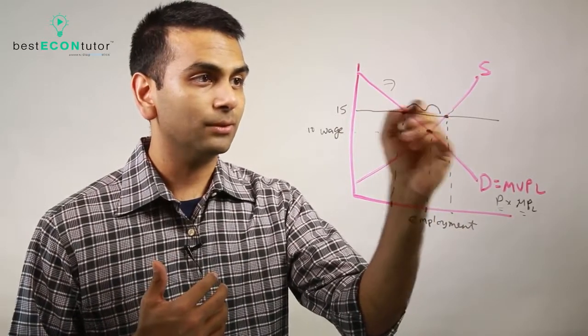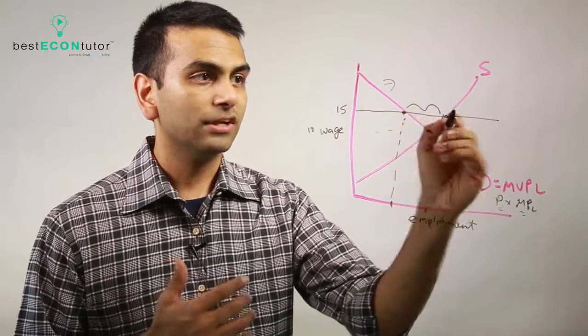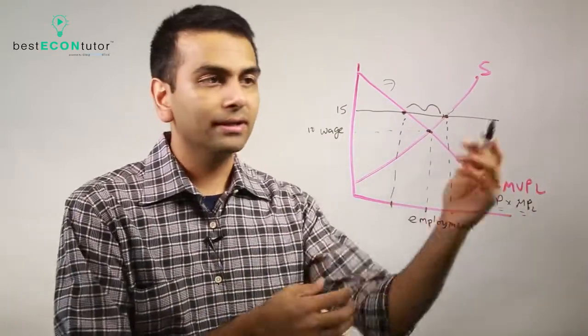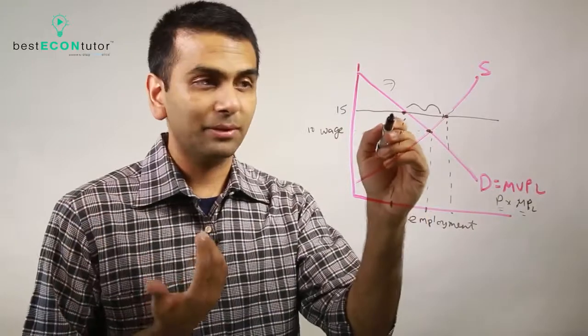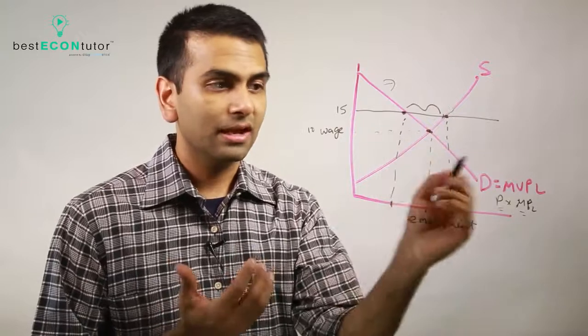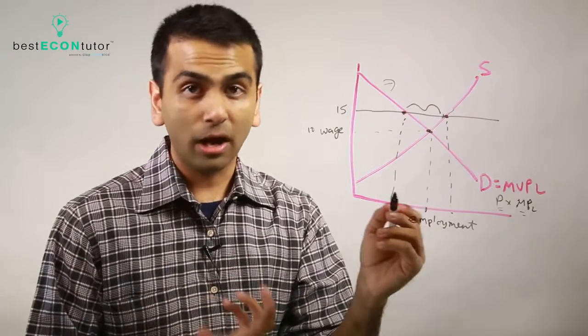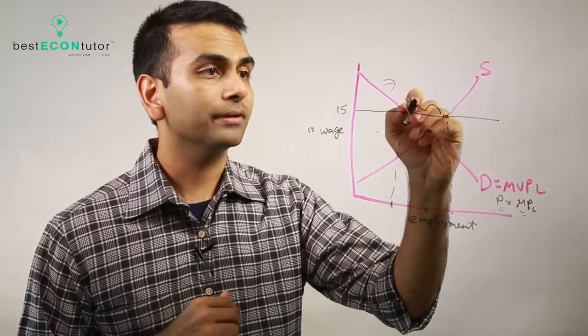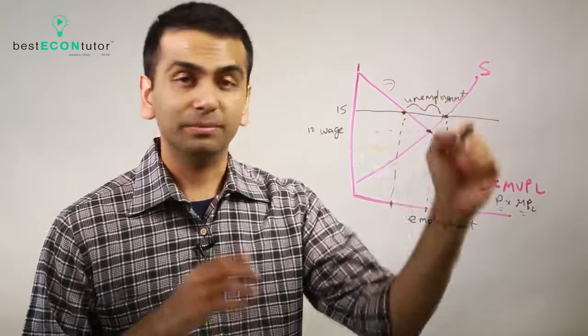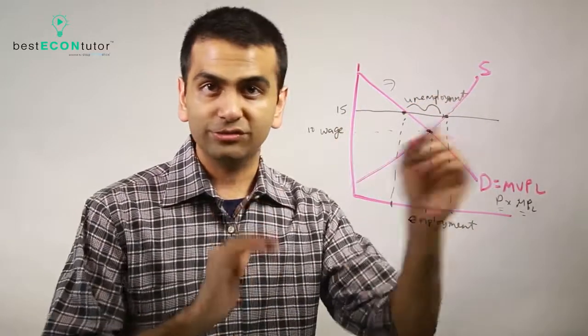And so what you end up having is you're not in equilibrium, you have this gap, this excess amount of workers, right? More workers are supplying hours of work, and not that much are demanded. Nobody wants to hire somebody at 15, but a lot of people want to work. So you have an excess, a surplus of workers. Those extra workers who can't find jobs, that's called unemployment. So that's how you can actually see unemployment on your supply and demand for labor if there's a minimum wage.